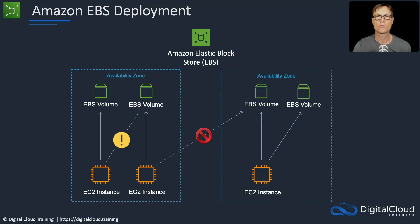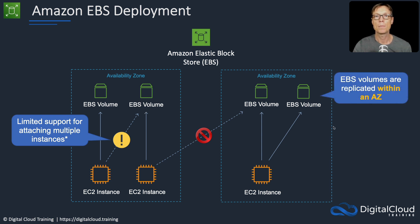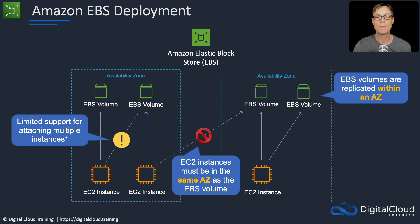Here's a diagram showing some of the potential ways you can use EBS volumes. We have two availability zones with instances attached to volumes within the same AZ. One instance is attached to multiple EBS volumes. With a standard EBS volume you cannot attach multiple instances to it, but there is something called EBS multi-attach. EBS volumes are replicated within an availability zone, giving you durability within an AZ. Instances must be in the same AZ as the EBS volume, whether you're using multi-attach or not.